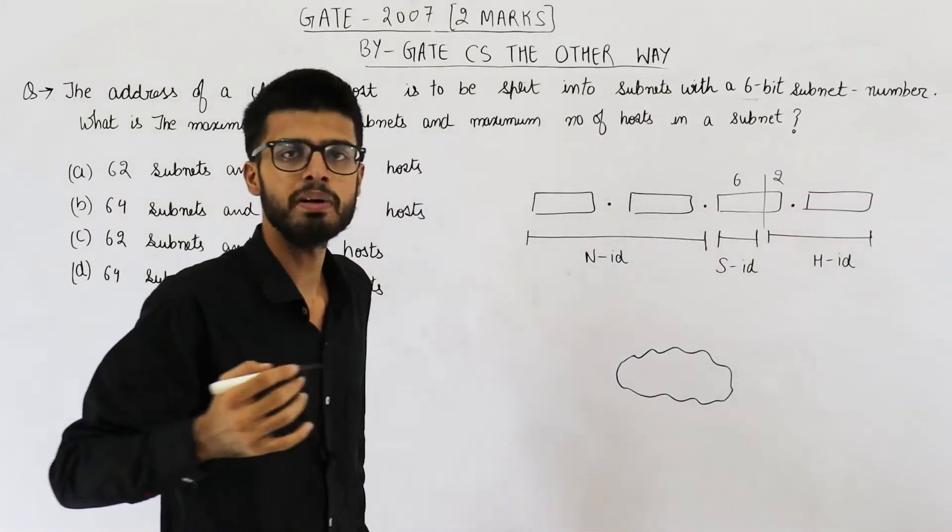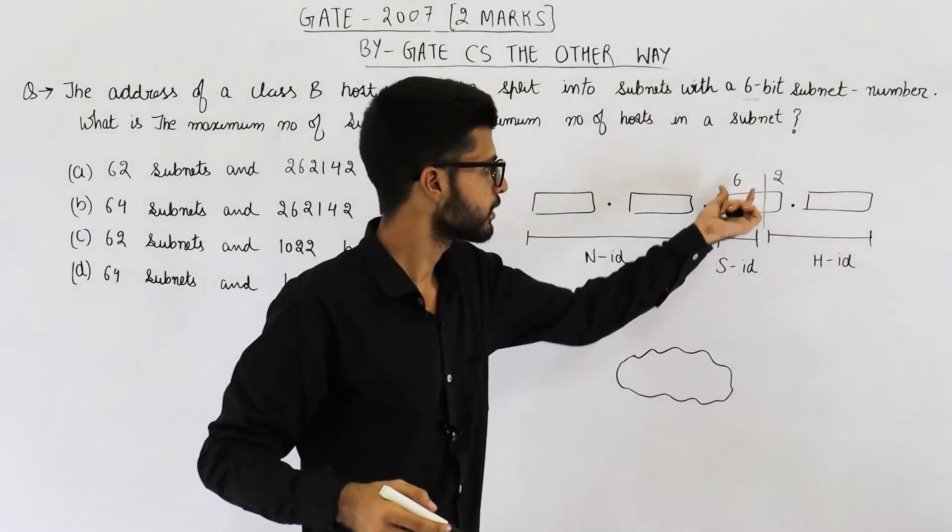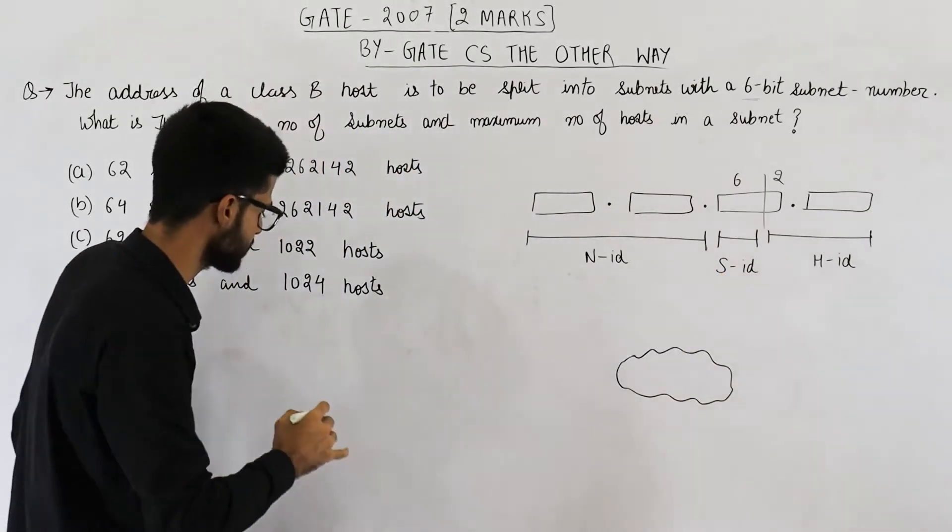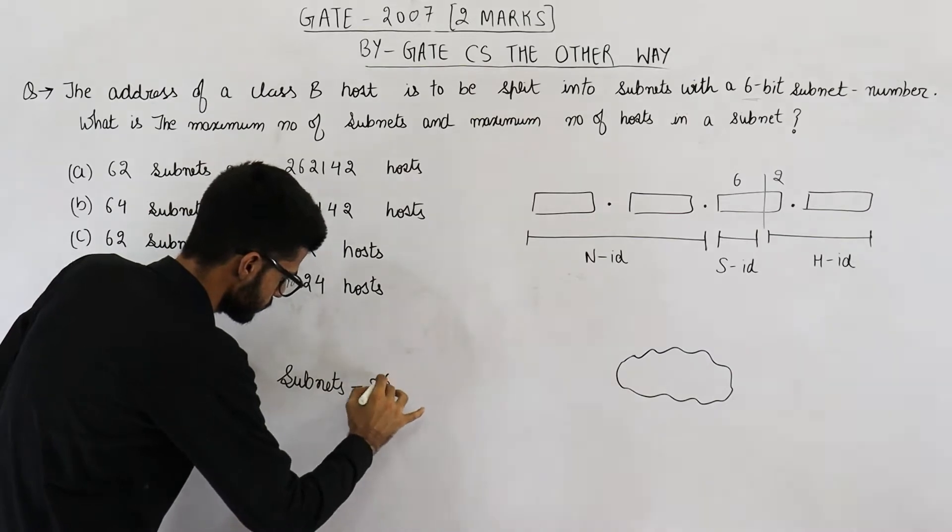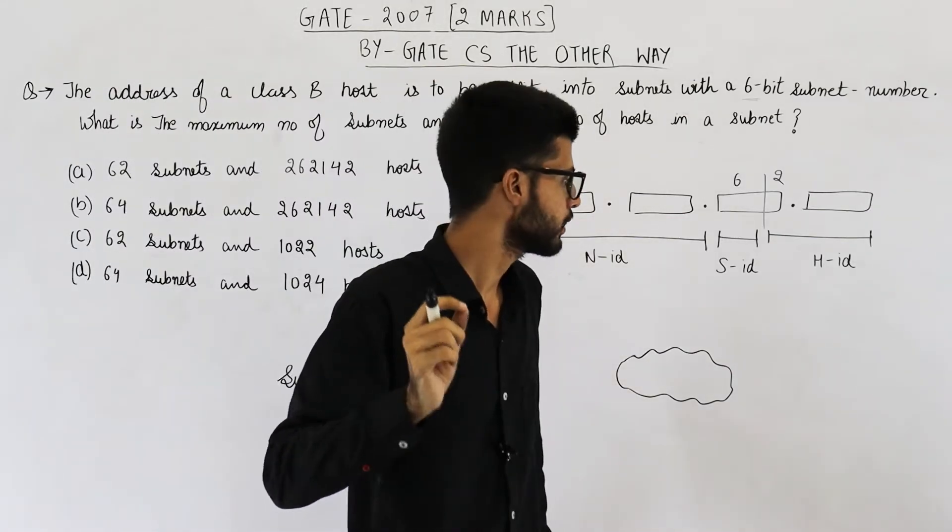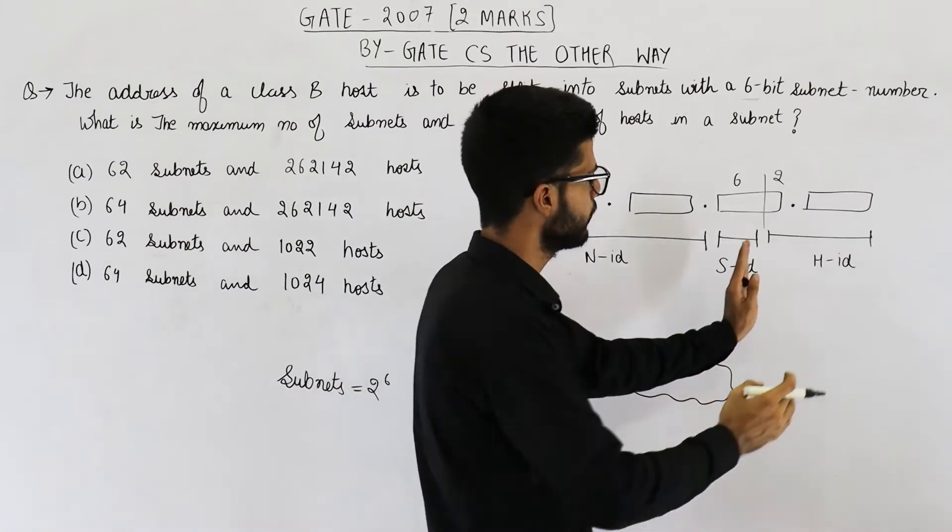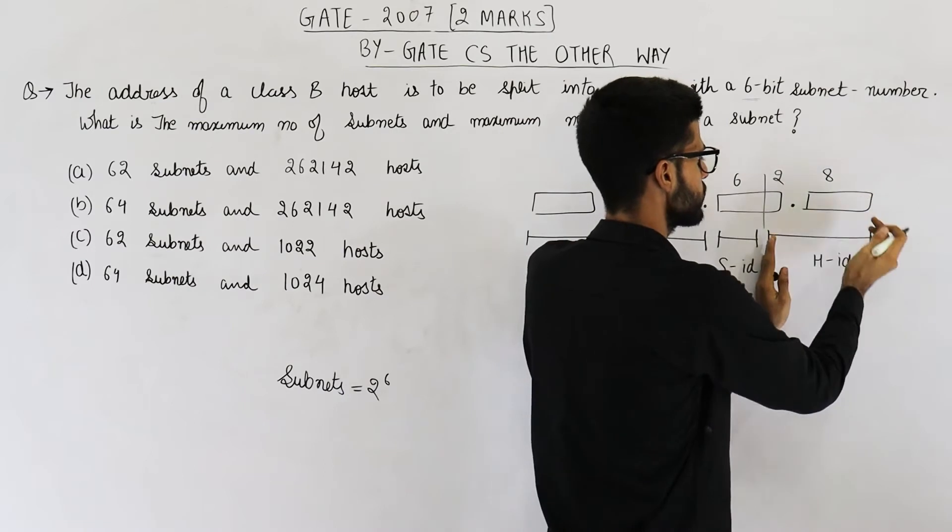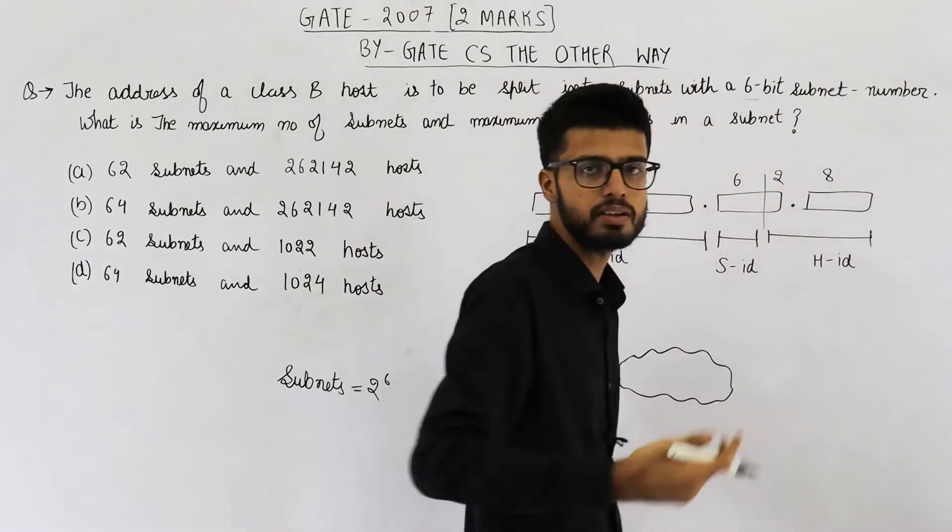Now let us see how many subnets are possible. You have 6 bits in subnet ID. So total number of subnets will be 2 raised to the power 6. And how many hosts can be configured in one subnet? That will be 2 raised to the power 10. Because 8 plus 2 is 10, we have 10 bits minus 2.